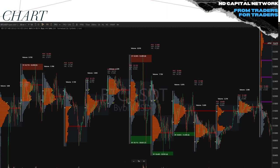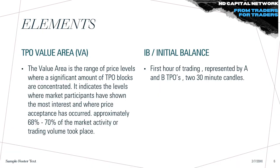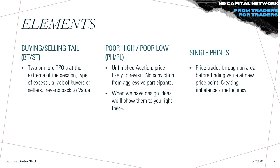This is how the TPO chart looks — you can see the price distribution visualized throughout the day. We have between 5 and 10 elements. First, the value area: the range of price levels where a significant amount of TPO blocks are concentrated, similar to the volume profile, covering about 68–70% of market activity. We also have the Initial Balance (IB), which represents the first period of trading — the A and B letters — two 30-minute candles.